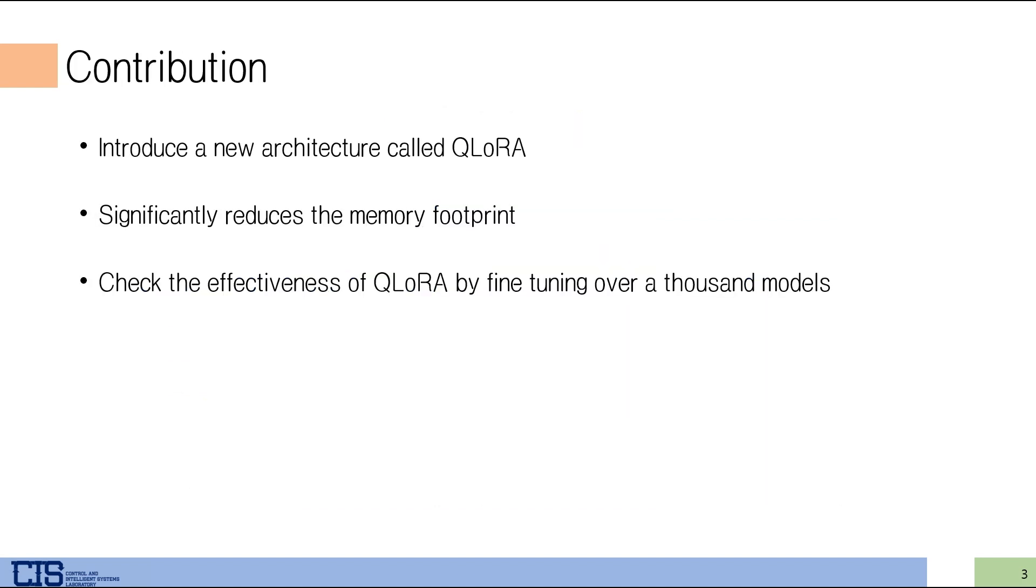Next, let's talk about the three main contributions of this paper. First, they introduce a new architecture called QLoRA. It is a combination of 4-bit quantization and LoRA. Next, they significantly reduce the memory footprint. They showed that it is possible to fine-tune a large model even on a single GPU. Lastly, they checked the effectiveness of QLoRA in fine-tuning over 1000 models.